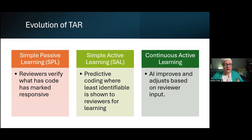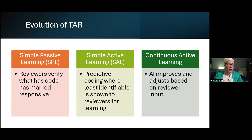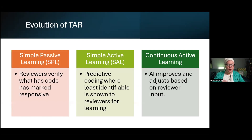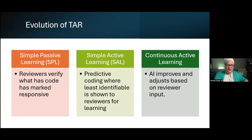TAR has been in use since 2017, and over the years it has evolved from TAR to TAR 2.0 to TAR 3.0. The initial versions used what's called simple passive learning, where reviewers would verify and mark something as responsive. That was the first iteration.